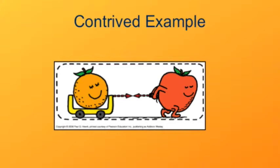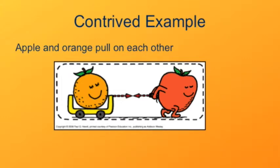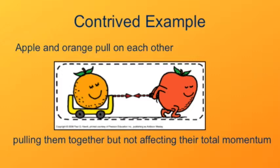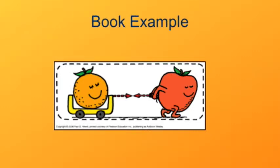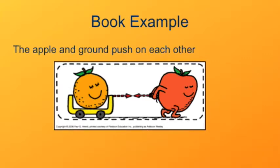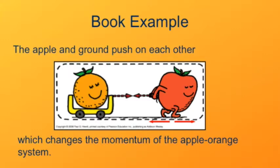Here's a silly example to illustrate the distinction between internal and external forces. We see the apple pulling on the orange to pull it forward. By Newton's third law, the apple and orange pull on each other with equal and opposite forces, tending to pull them together. But these forces do not affect the total momentum of the orange-apple system. The apple and the ground, on the other hand, push on each other — that is an external interaction, the ground being external to the apple-orange system. So that force will accelerate the whole apple-orange system and change its momentum.